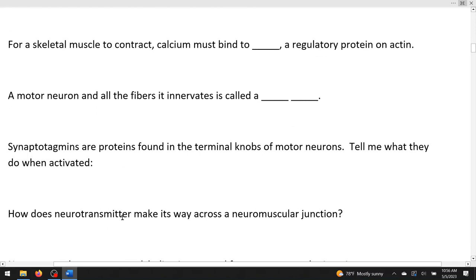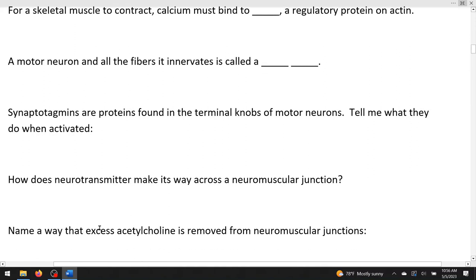How does neurotransmitter make its way across a neuromuscular junction? Well, it's released into it and then very simply it just diffuses across. Name a way that excess, mean too much acetylcholine, ACH, is removed from neuromuscular junctions. There are several ways if it's just diffusing across it can simply diffuse out of the junction. Some of it is reuptaken depending on the mechanism and some of it is destroyed by an enzyme called acetylcholine esterase.